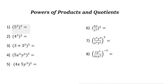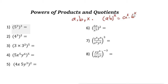Powers of products and quotients: for any nonzero numbers A and B and any integer X, the rule is that (AB)^x equals A^x times B^x. So for any nonzero numbers A and B, and integer X, you can write (AB)^x as A^x · B^x.